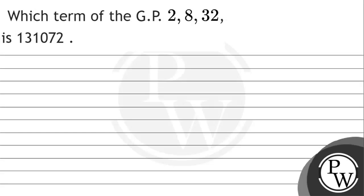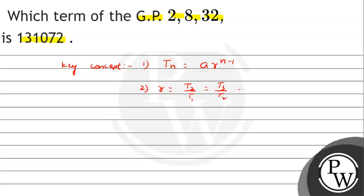Let's read this question: which term of the GP 2, 8, 32, ... is 131,072? The key concept here is the general term of a GP: tn = a·r^(n−1), where the common ratio r = t2/t1 or t3/t2, and a is the first term.